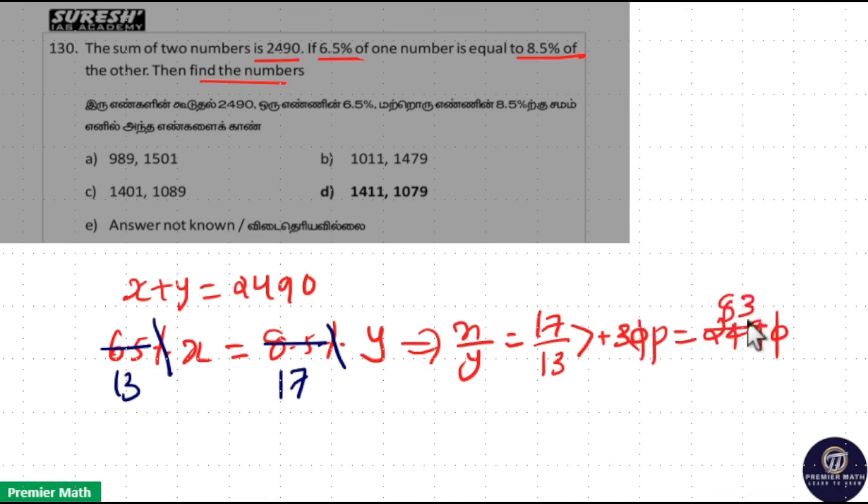So 30 parts is given as 2490. Cancel: 3 goes 8 times in 24, 3 times in 9, so 1 part is 83. This means 17 parts equals 17 into 83. 7 into 3 is 21 remaining 2, 8 into 7 is 56 plus 3 is 59, 59 plus 2 equals 61 remaining 6, 8 into 1 plus 6 equals 14. So one number is 1411.